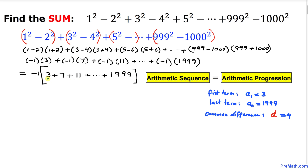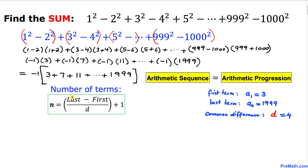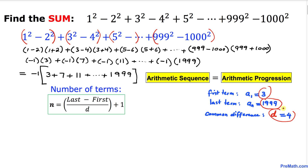We need to find n, the number of terms. The formula is: n = (last term − first term) / common difference + 1. In our case, the last term is 1999, the first term is 3, and the common difference is 4.